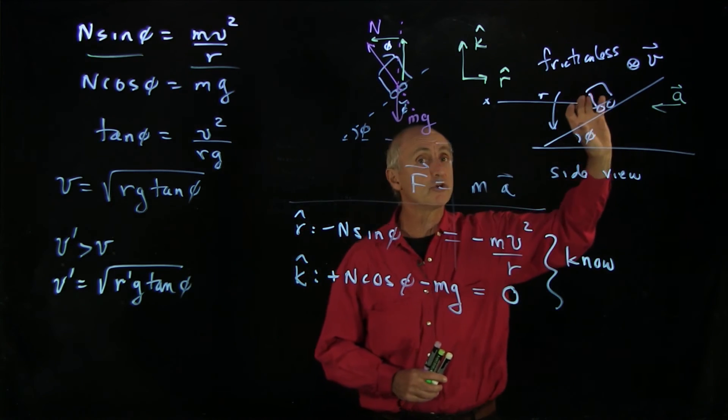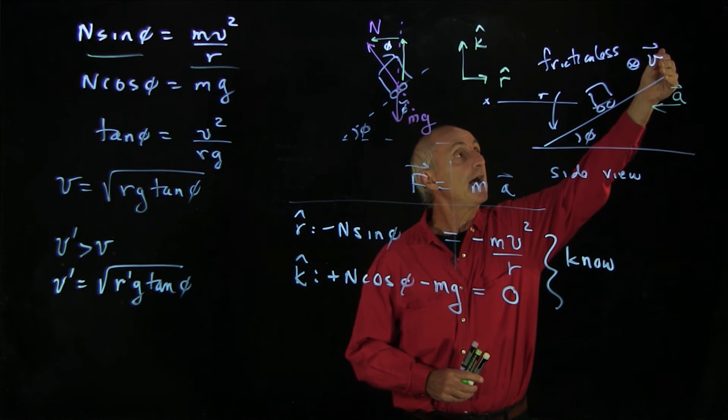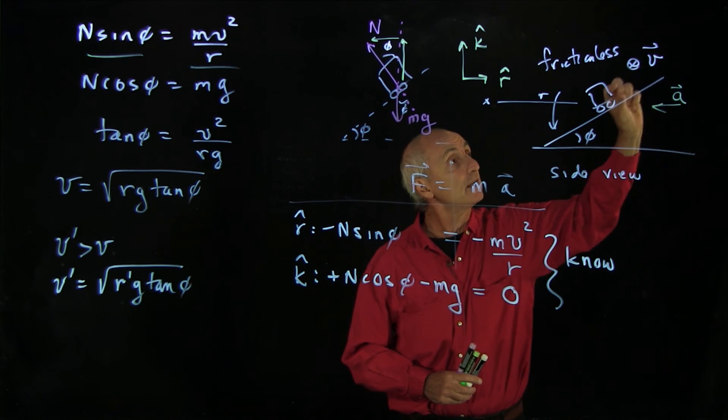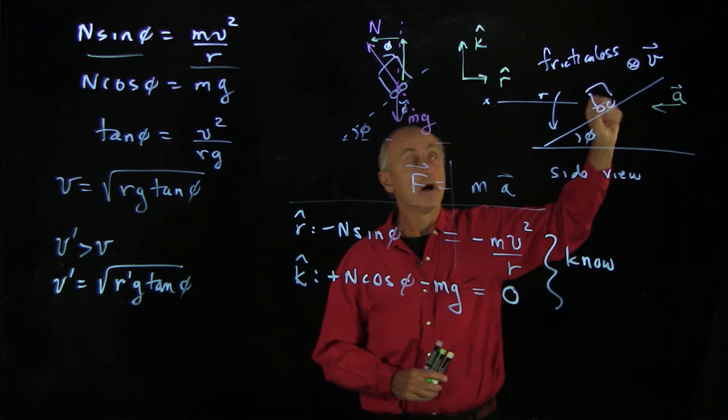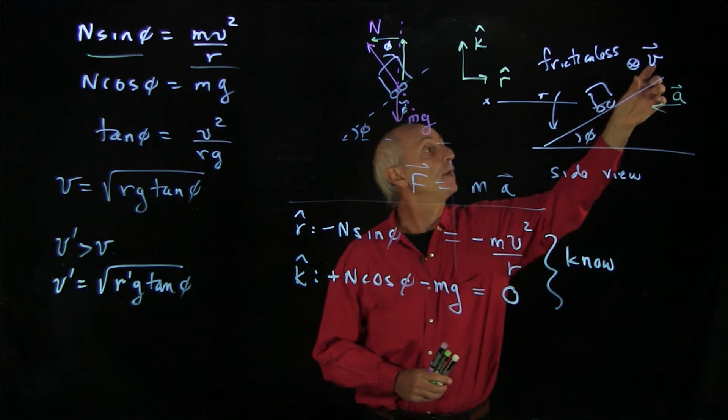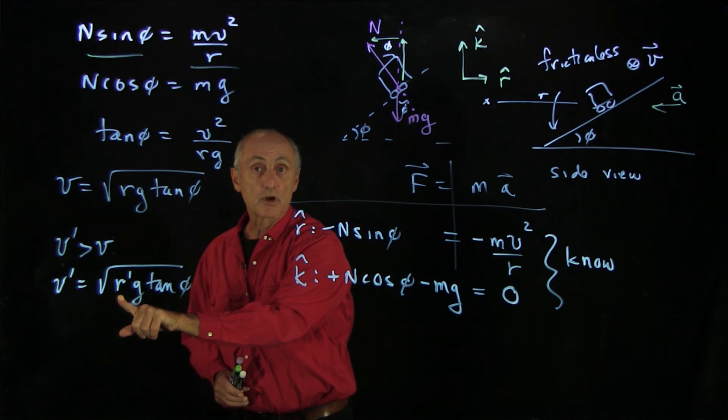Because the car will have a little inertia, it will overshoot that radius. Then it will start to come back down the inclined plane, and it will oscillate about that point. It won't be sinusoidal oscillations, but there'll be a periodic oscillation about this new radius, r prime.